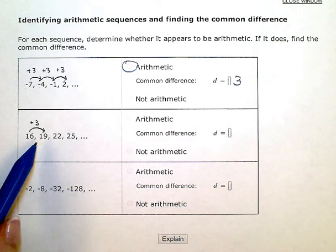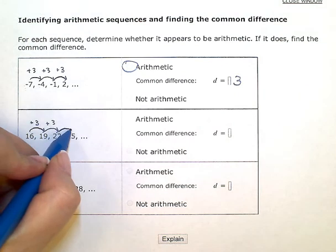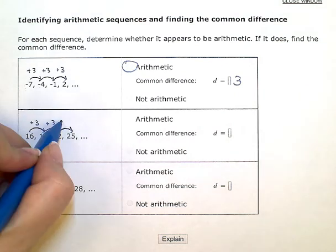To get from 19 to 22, again, add 3. To get from 22 to 25, again, add 3.